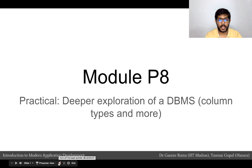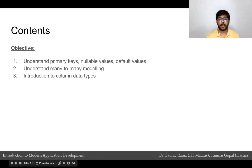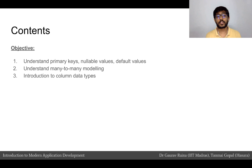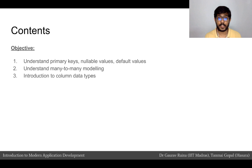Hi everybody. In this module we will be looking at a deeper exploration of DBMS. We will be looking primarily at different kinds of column types and slightly more advanced modeling. Our primary objective in this quick practical module is to get a little deeper into understanding different column types. We will also understand primary keys in more detail, and look at many-to-many modeling, which is very common and useful when modeling for relational databases.